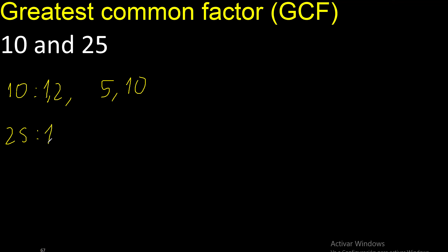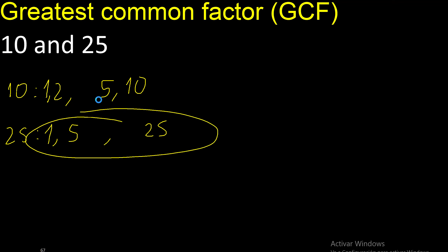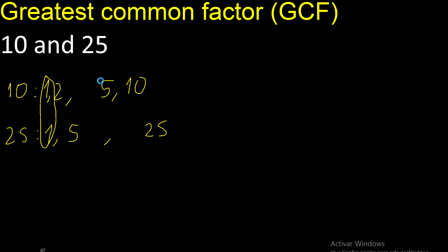Here, always start with 1. 25 divided by 1 is 25. Next 2: 25 cannot be divided by 2. Cannot be divided by 3. Cannot be divided by 4. 5 divided by 5 is 5. 5 is here. Factors, equal.